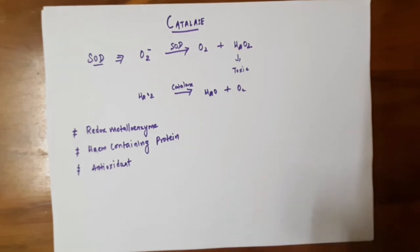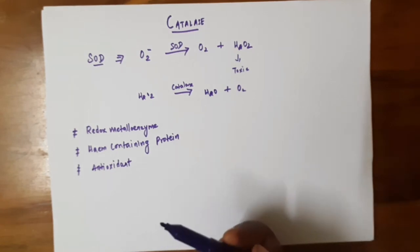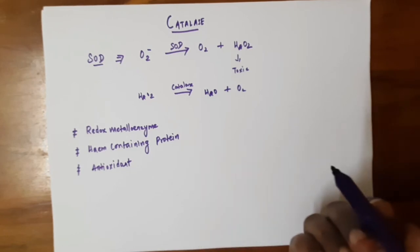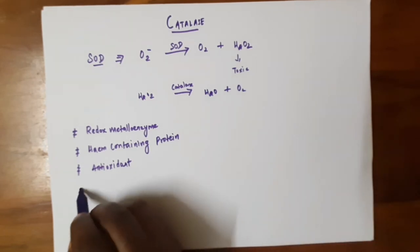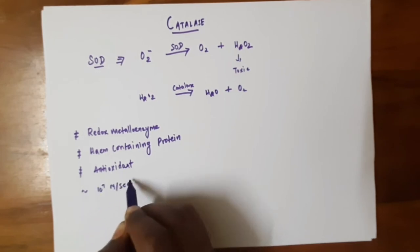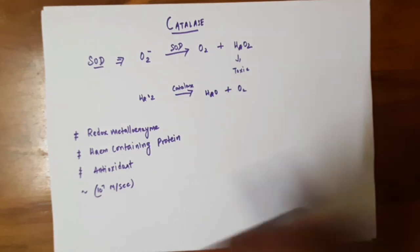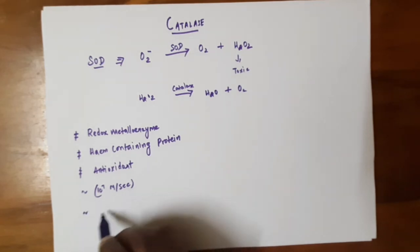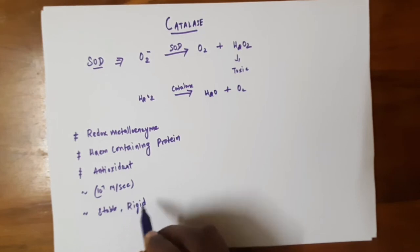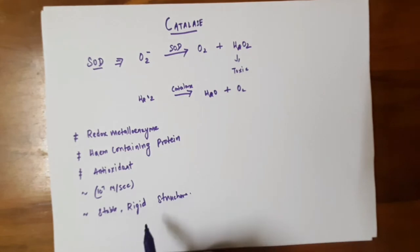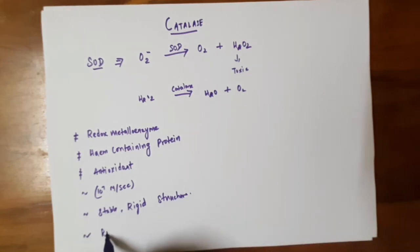This heme-containing protein decomposes hydrogen peroxide to molecular oxygen and water millions of times. Catalase has a very stable and rigid structure and is resistant towards changes in pH.